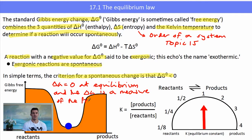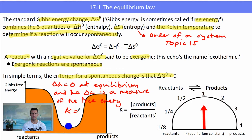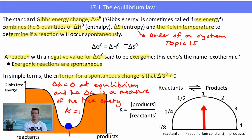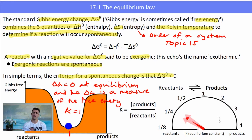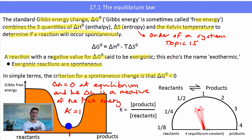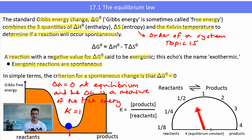Remember that delta G is a measure of free energy. If we have a delta G equal to zero, our equilibrium constant K is one, because the concentration of products and reactants is virtually identical. On the right hand side we have the ratio between products and reactants — a one-to-one ratio means we're sitting at equilibrium. The bigger the ratio, the more towards the product side; the smaller the ratio, the more towards the reactants.